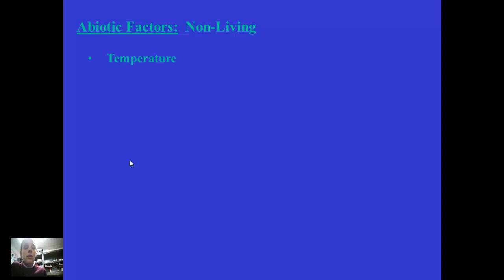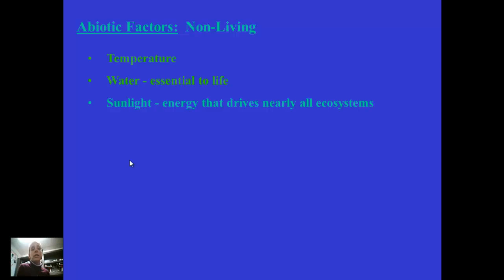Some abiotic or non-living factors include temperature; water, which is essential to all life on Earth; and sunlight, which is also vitally essential to all life on Earth. Sunlight is the energy in the form of solar radiation that travels via electromagnetic waves to reach the surface of our Earth. That energy is what drives nearly all ecosystems, because plants use that energy to photosynthesize, and without plants we would have no food chain.